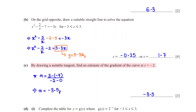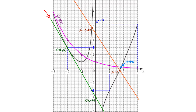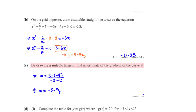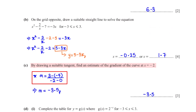By drawing a suitable tangent, find an estimate of the gradient of the curve at x = negative 2. On the grid, we draw a tangent at x = negative 2 and pick two points: (negative 2, 3) and (0, negative 4). Using the gradient formula: m = (3 minus negative 4) divided by (negative 2 minus 0), giving negative 3.5.